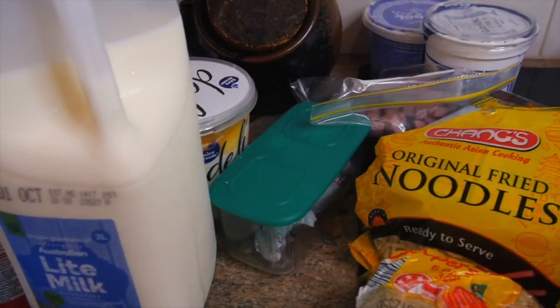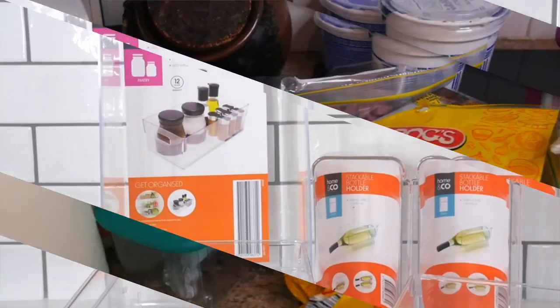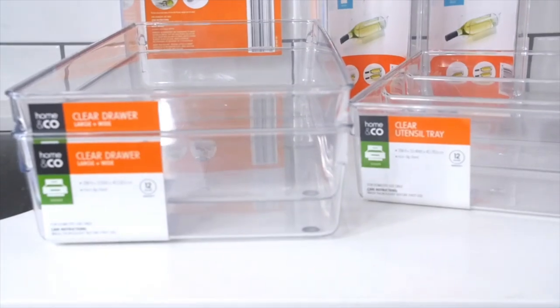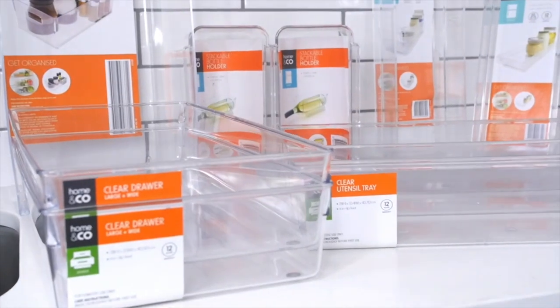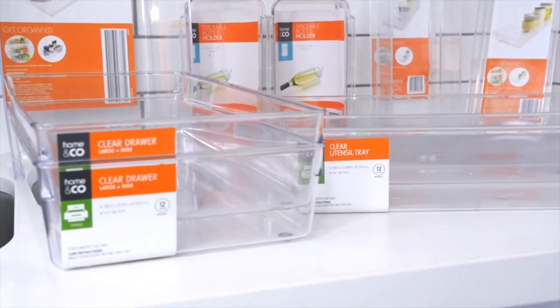In terms of organizing everything in a way that's easy to maintain, I purchased a bunch of these clear acrylic compartments from Kmart. They're a cheaper version of the containers available at stores like Howard Storage World and are widely available online.